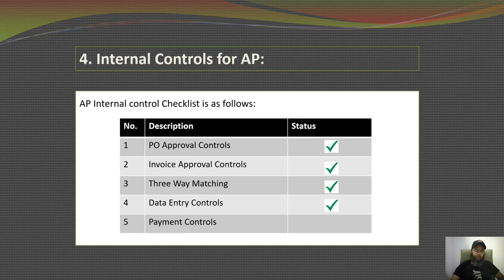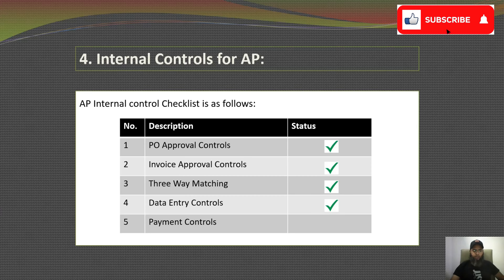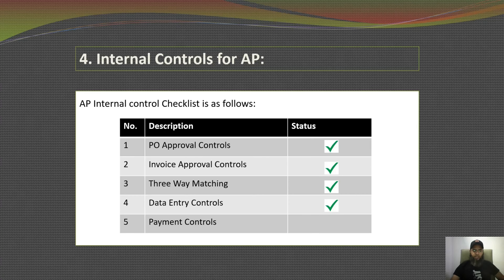The next internal control is data entry controls. Data entry input controls are key controls that every company should have implemented in its business process. They ensure that all relevant information from a supplier's invoice has been correctly entered into the accounts payable. All data entered into the accounting system must be checked by other staff members regularly. AP automation can also help ensure both efficiency and accuracy of the data entry process.